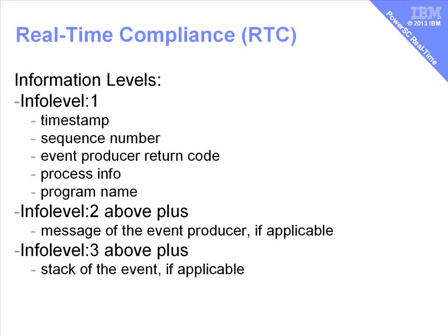Let's have a look at the info levels that we set in our configuration. Info level 1 gives us the basic details: timestamp, sequence number, the process involved, and the program name. Level 2 gives you a bit more information about event producers - programs that are aware of the AHA file system and can supply information about what they're trying to do. Level 3 then includes the stack trace that we had a look at. This can be quite useful to prove to the application developer that their program was the culprit - perhaps the application has been tricked into modifying a system file, and that can help them find out what was happening and why.